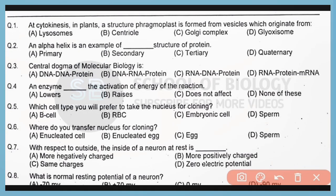Question 1. At cytokinesis in plants, a structure called phragmoplast is formed from vesicles which originate from the Golgi complex.